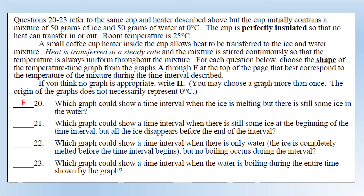Which graph shows a time interval where there is still some ice at the beginning but all the ice disappears before the end? The answer is B: initially the temperature is constant while there is still ice, and then once it's all melted and we're supplying heat at a steady rate, we get a straight line increase.